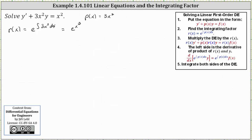Now I multiply both sides of the differential equation by the integrating factor. This gives us e to the power of x cubed times y prime plus 3x squared e to the power of x cubed times y, equals on the right x squared times e to the power of x cubed.